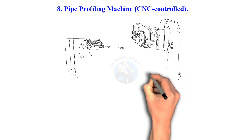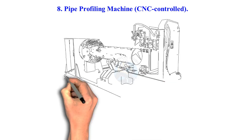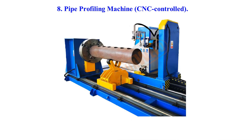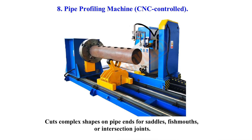Pipe profiling machine, CNC-controlled. Cuts complex shapes on pipe ends for saddles, fish mouths or intersection joints.